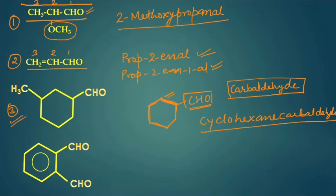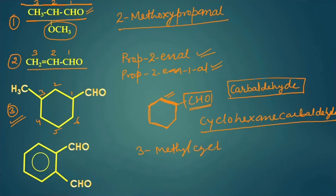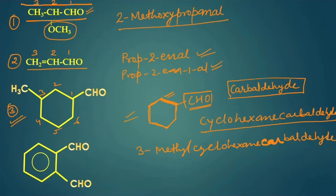Now try to write the IUPAC name of the third compound. The compound is cyclohexane with a methyl group at the third carbon and an aldehyde group attached. Using the carbaldehyde suffix, the IUPAC name is 3-methylcyclohexanecarbaldehyde. There should be no gap between any part of the name.